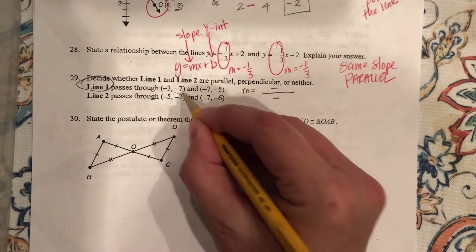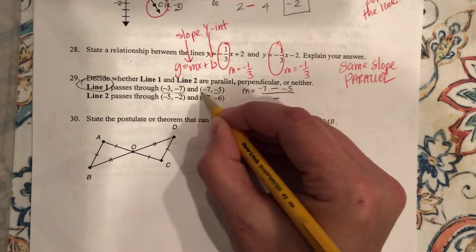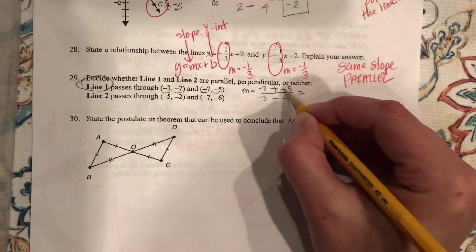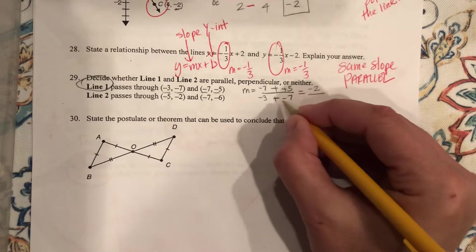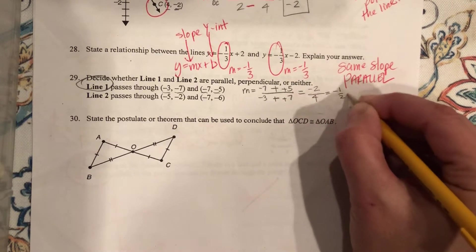What are my two Y's? Negative 7 and negative 5. What are my two X's? Negative 3 and negative 7. So plus a positive, so that gives you negative 2 over plus a positive 4, which is negative 1 half.